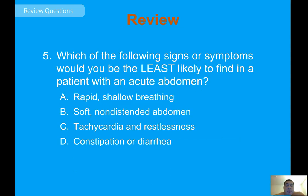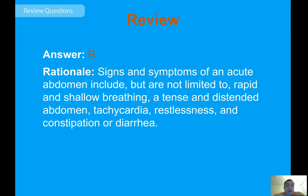Review question: which sign or symptom would you be least likely to find in a patient with an acute abdomen? The answer is B. Signs and symptoms of an acute abdomen include rapid and shallow breathing, a tense and distended abdomen, tachycardia, restlessness, and constipation or diarrhea. Remember, distended means extended further out — patients with liver or kidney disease often have distended abdomens because they are retaining fluid.